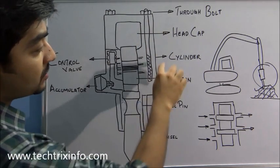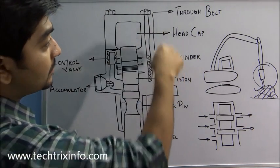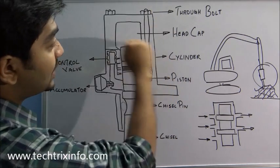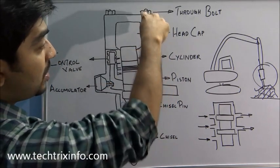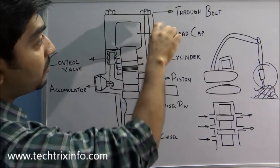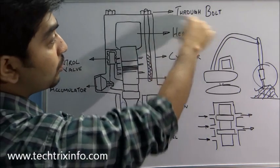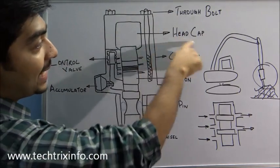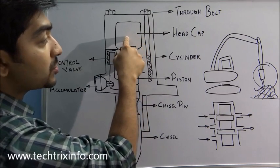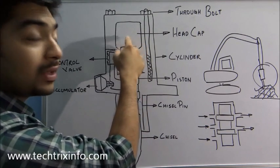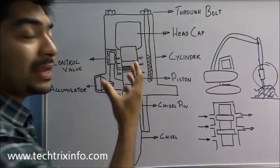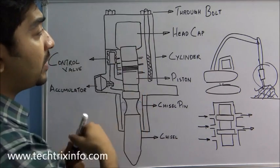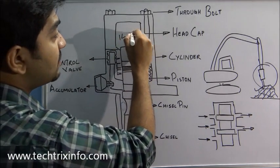The casing of the rock breaker is called the cylinder. It has a casing, and we have through bolts because it is built in three sections — for joining them we have through bolts on the top. Then we have a head cap here; this portion will be filled with nitrogen gas at a pressure of nearly 14 to 18 bar.